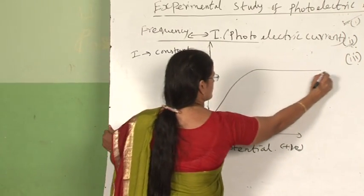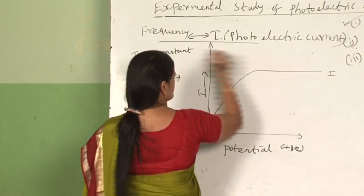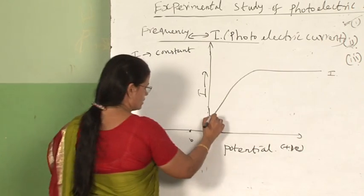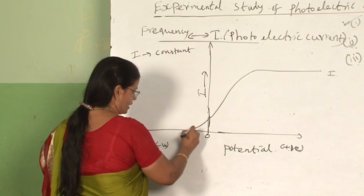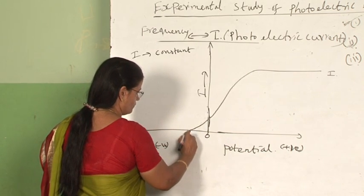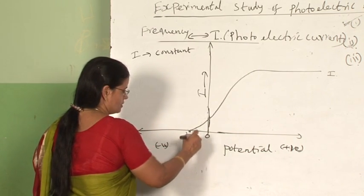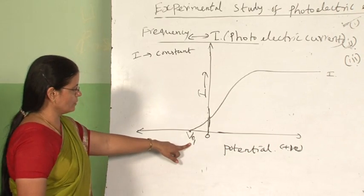If this graph is for the same intensity I, now if you give negative potential, we know that the current will become zero at a particular negative potential which is called stopping potential.